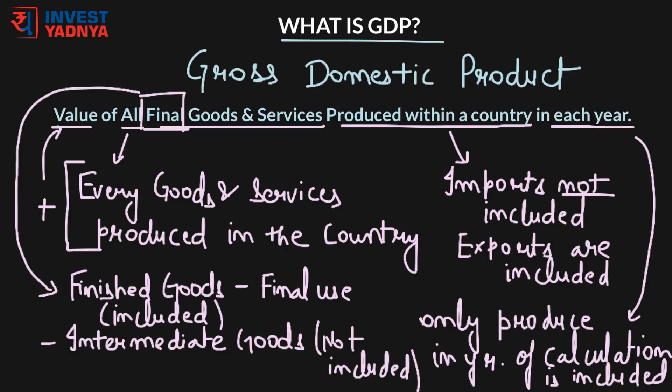Capital goods are goods that are used as intermediate goods to produce a final product but are still included in the calculation of GDP. For example, a tractor used by farmers for producing potatoes — a final good — is still included in the calculation of GDP.